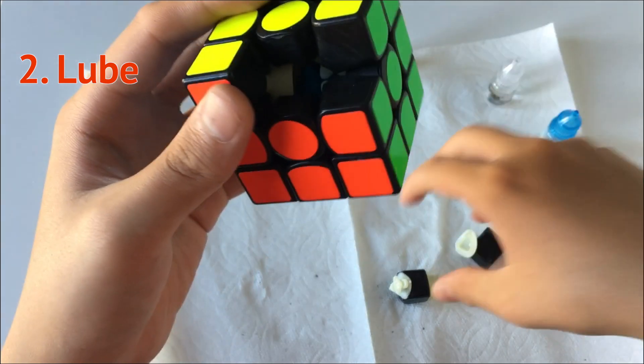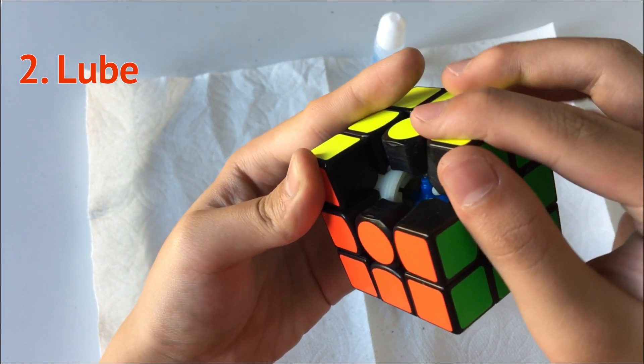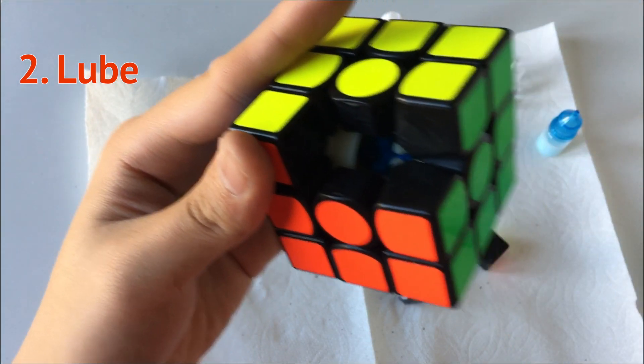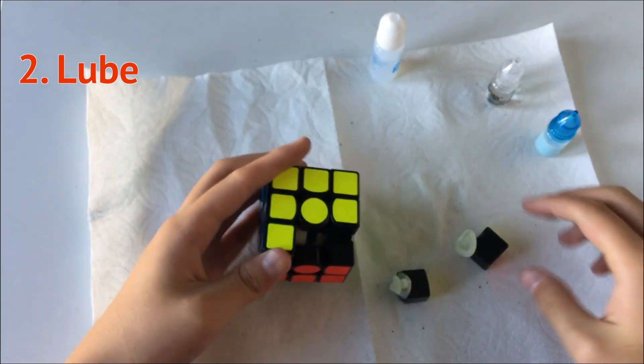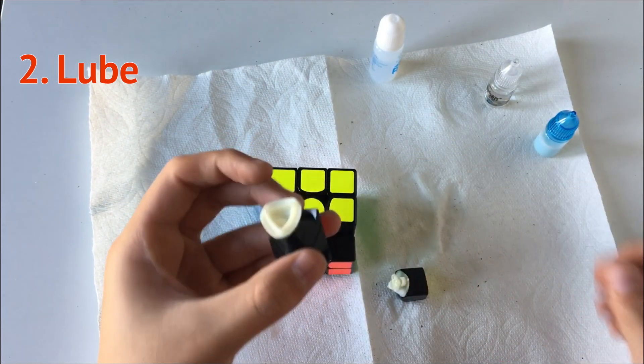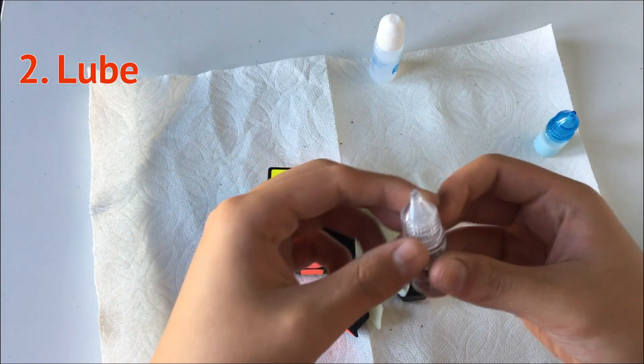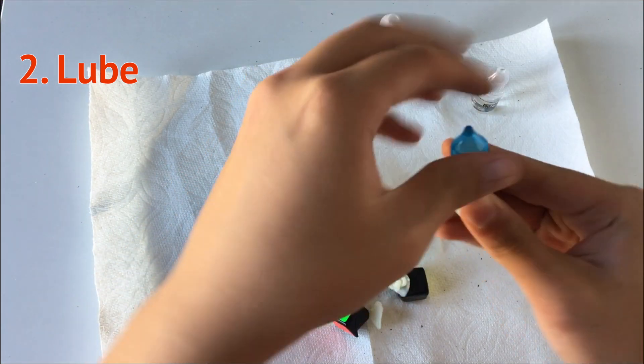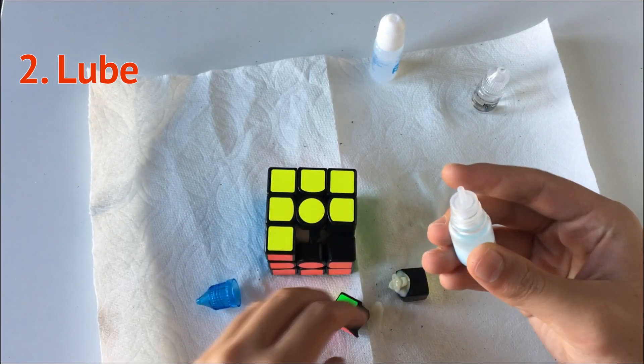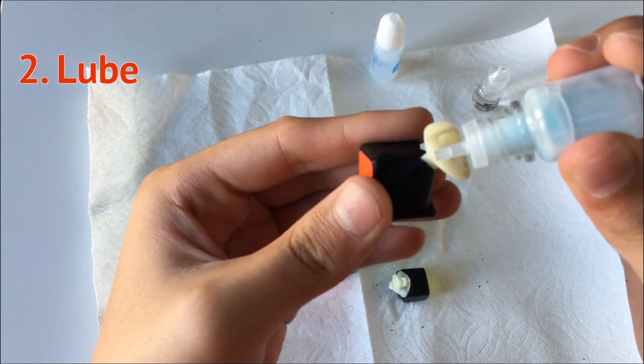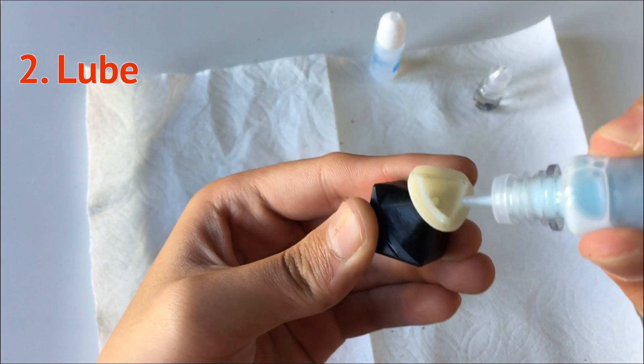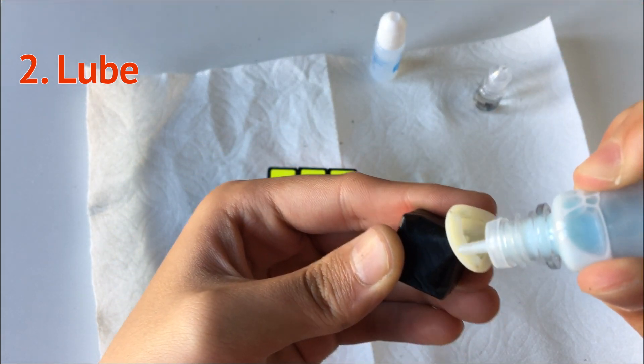So now I want to lube the parts that will be making contact with the puzzle. For example, right here I'm going to use probably the Moji lube, and then just going to put it here because I think it's going to make contact.